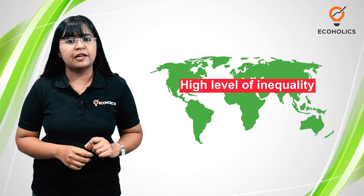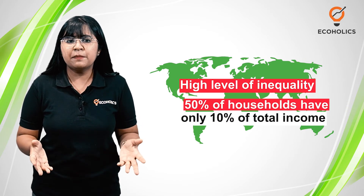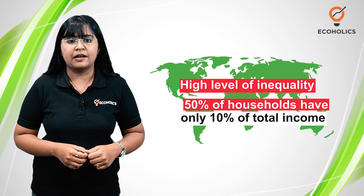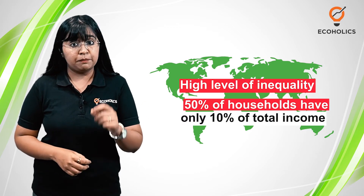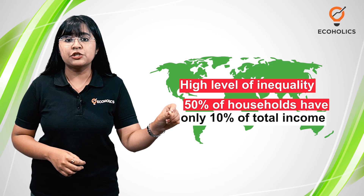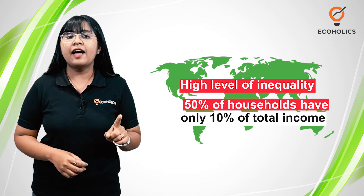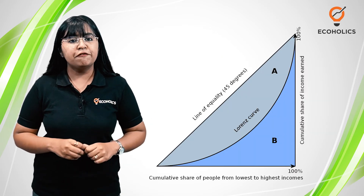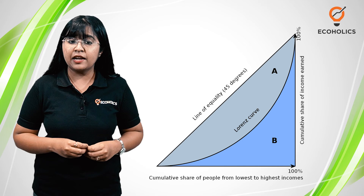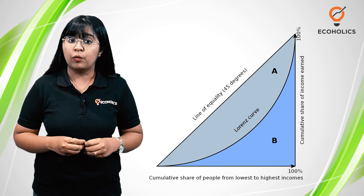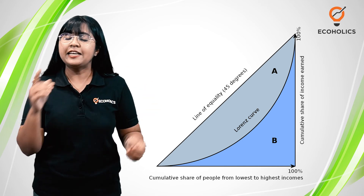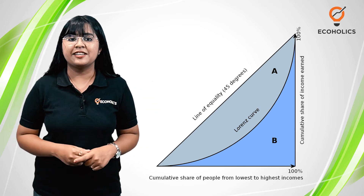Now if a country has a high level of inequality, the majority of households will have a low share of national income — say 50% of households have only 10% of total income. If we plot all the points for this country, we will have a Lorenz Curve. The farther away the Lorenz Curve is from the line of perfect equality, the greater is the level of inequality in that country.